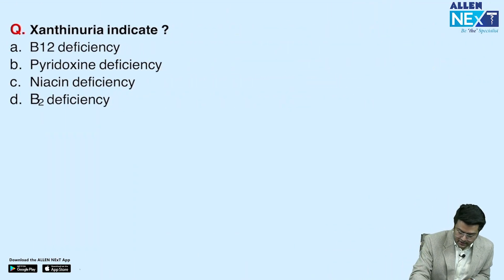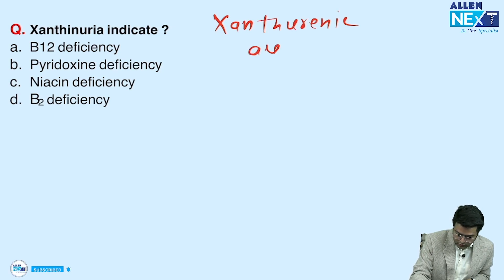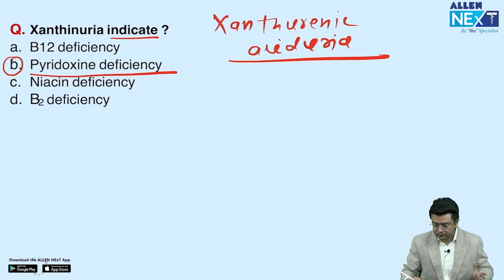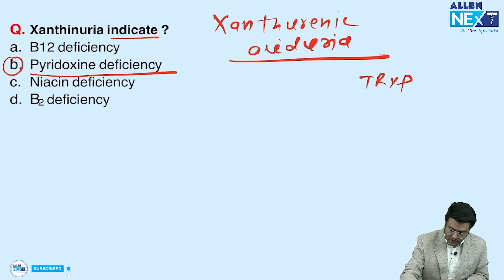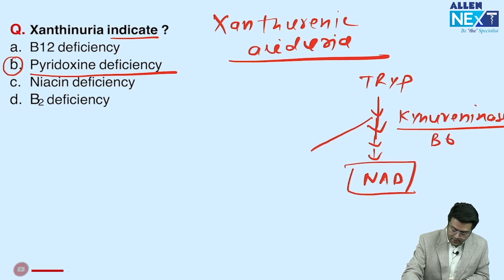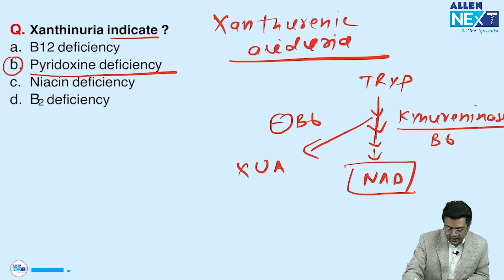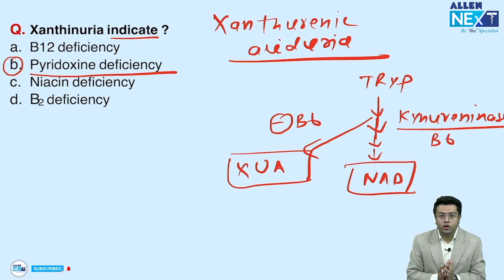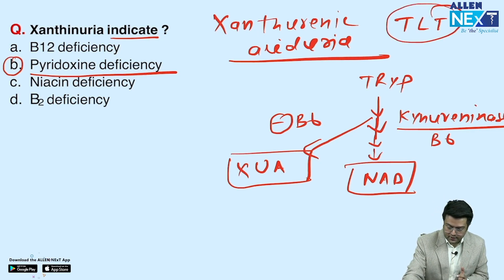Moving to the next question on xanthuranic acid — the answer is vitamin B6 deficiency. During tryptophan metabolism, an enzyme called kynureninase is needed, which is B6-dependent. Ultimately this pathway produces niacin or NAD. If this enzyme or vitamin B6 is deficient, then we get xanthuranic acid. This test is also called the tryptophan load test.